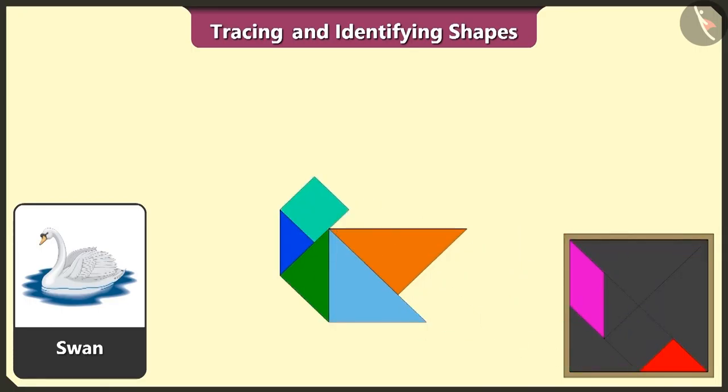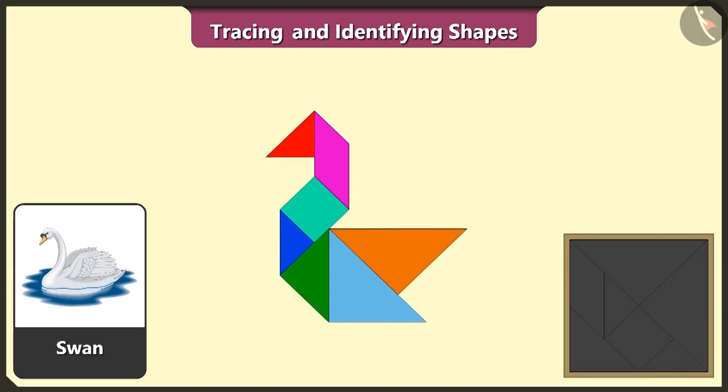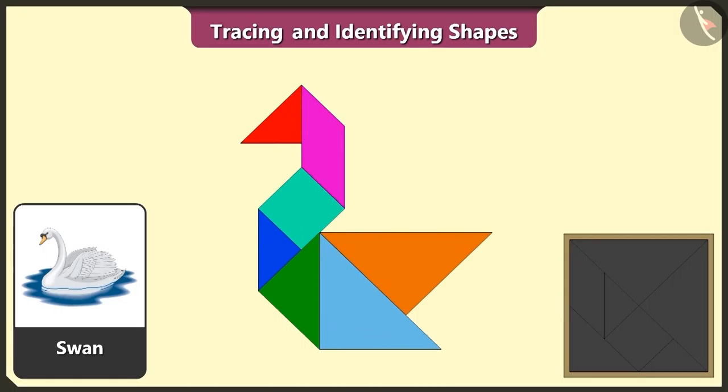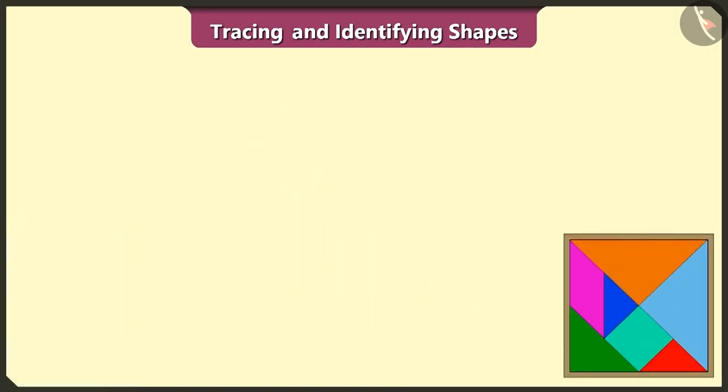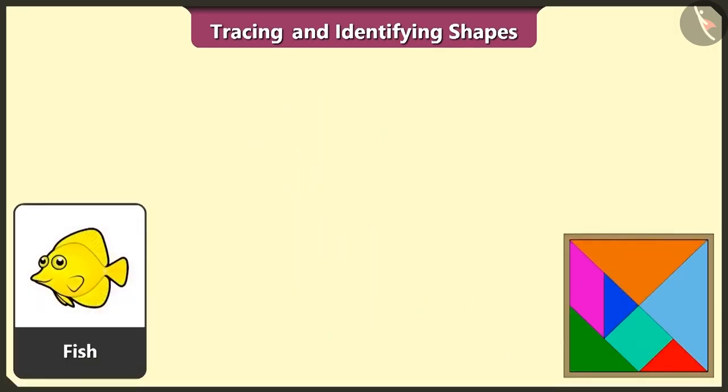One square, one quadrilateral, and one more triangle — the swan is also ready! This is really interesting.